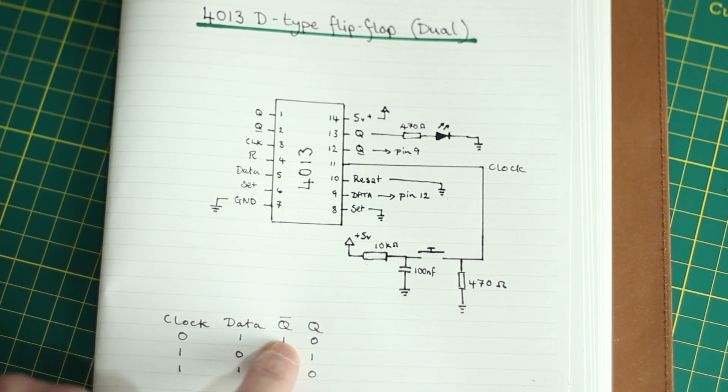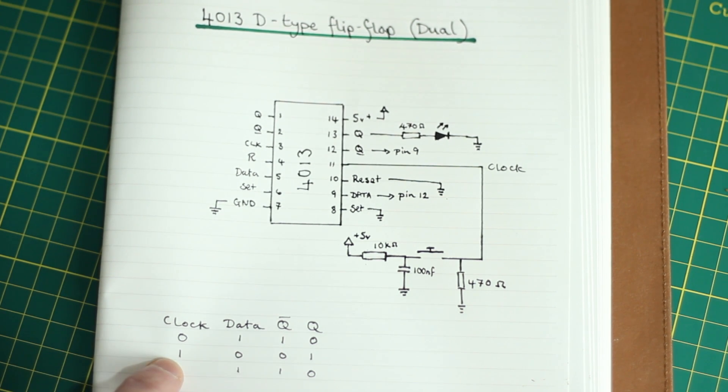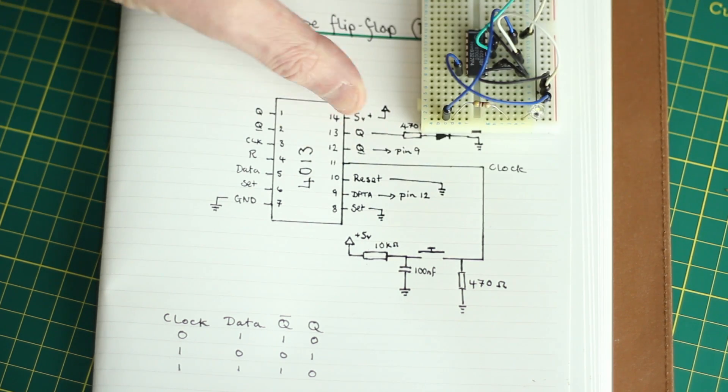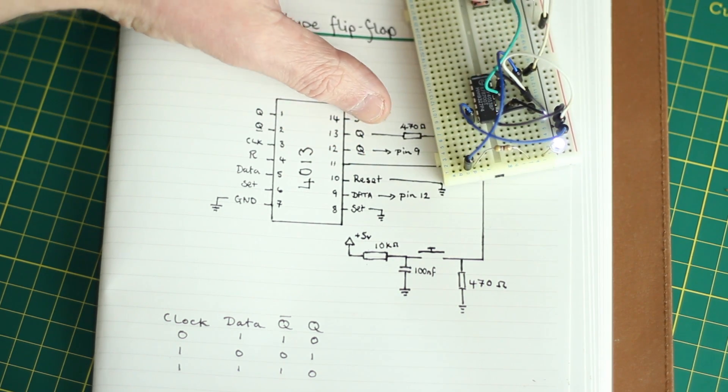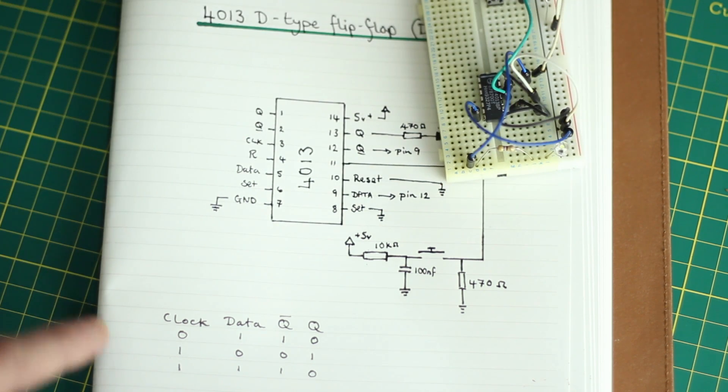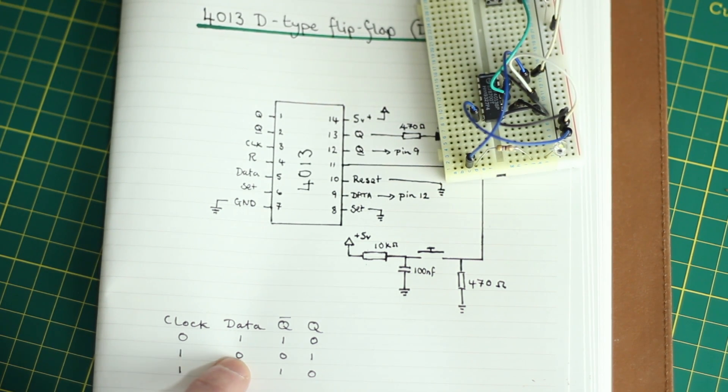When you send another clock pulse—when you press that switch, this one here—when you press that switch, you're sending a clock pulse through. And that clock pulse transfers the data from here to the Q output.